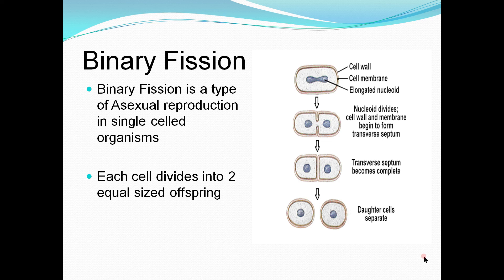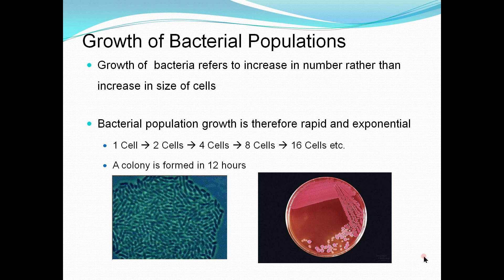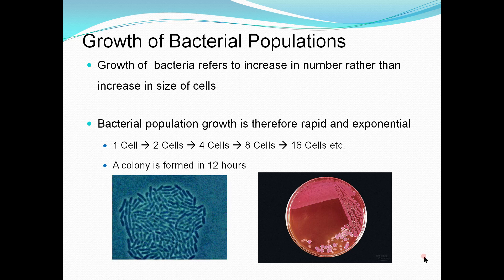Growth of bacteria refers to the increase in the number of bacteria rather than the size of the bacteria. Bacterial size remains constant; only the number of bacteria increases. Population growth is therefore very rapid — it's an exponential growth in which one parent cell divides into two daughter cells, then two into four, then four into eight, and so on.